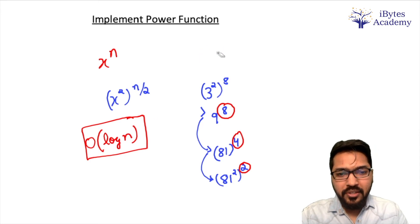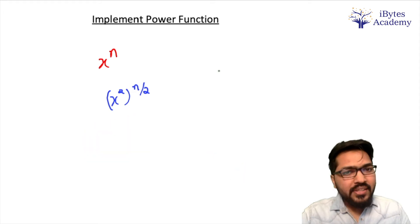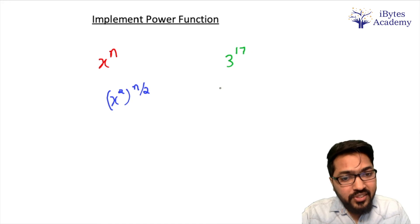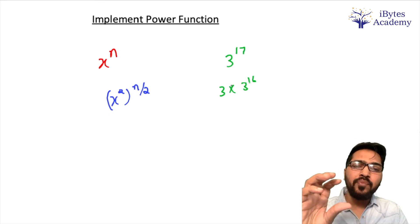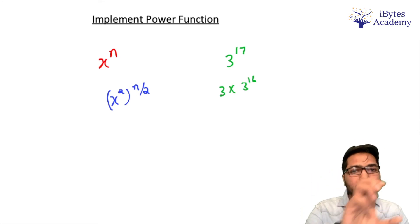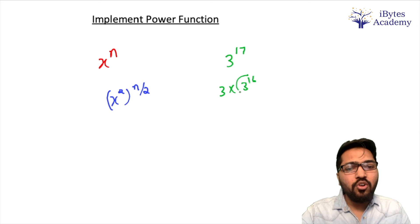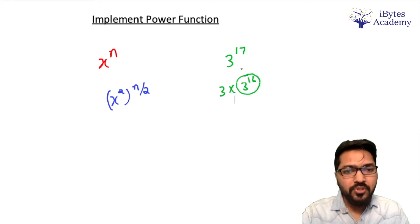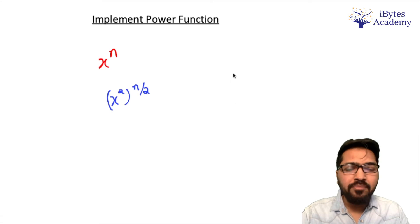We will use this approach. But one thing I want you to understand is if I was asked 3 to the power 17. In that case I would have written this first as 3 into 3 to the power 16. That is, if my power is odd, then convert it to base times base to the power n minus 1, and then obviously you can further solve it.